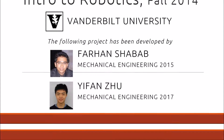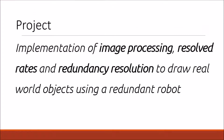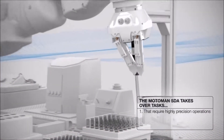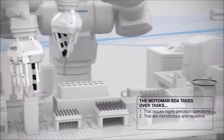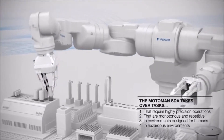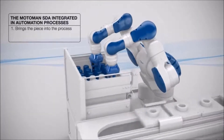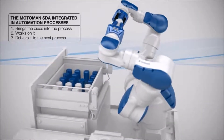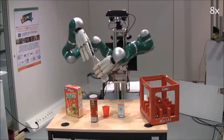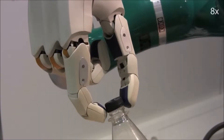The project was to implement image processing, resolve rates, and redundancy resolution to get a robot to draw real-world objects. Being inspired by the multitude of dexterous robots used in industry, we wanted to quasi-emulate a robot performing a dexterous task. We also wanted to explore the adaptability of control algorithms on non-specialized robots.